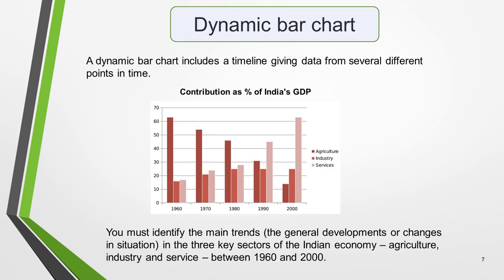Our practice graphic is a dynamic bar chart. That is, it includes a timeline giving data from several different points in time. So for this question we need to identify the main trends — that is, the general developments or changes in situation. On this bar chart we must look for the main trends in the three key sectors of the Indian economy: agriculture, industry and service, between 1960 and 2000.